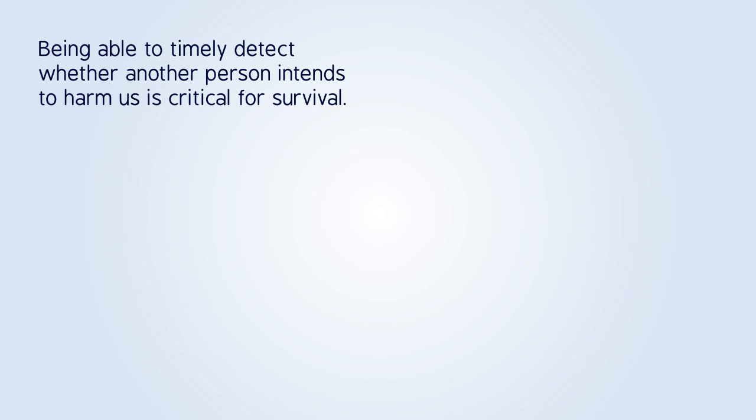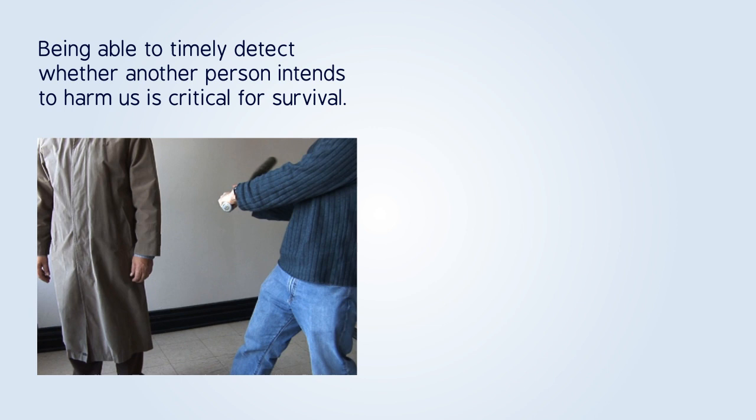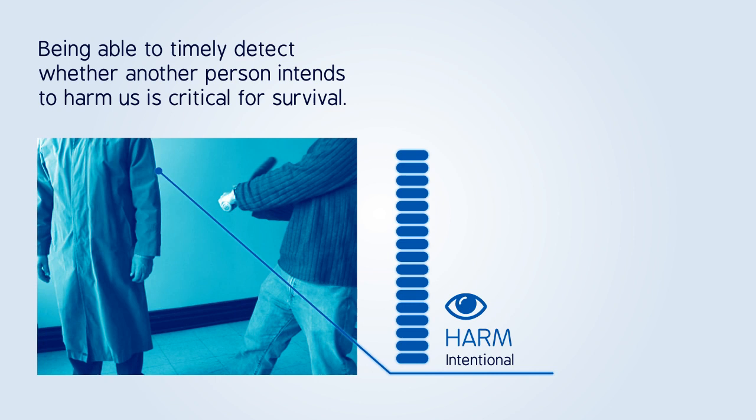Being able to timely detect whether another person intends to harm us is critical for survival. If we see a person inflicting pain on another and consider that he acted deliberately, we tend to believe that the harm was greater than if the action had been accidental.